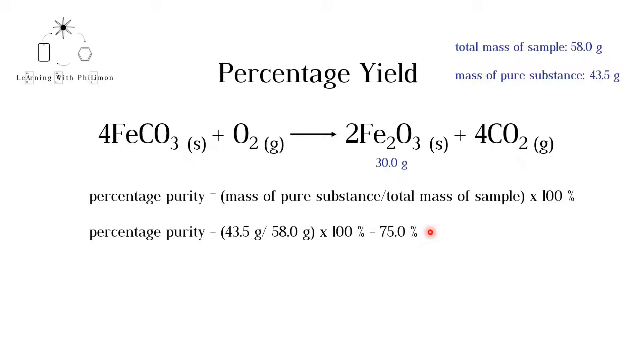Note that this method works only if we assume that the percentage yield is 100% when considering the 43.5 grams reacting. This means that no product is lost upon recovery.